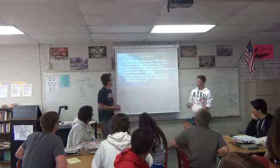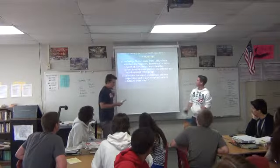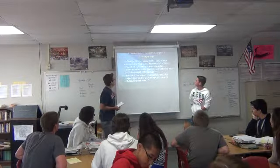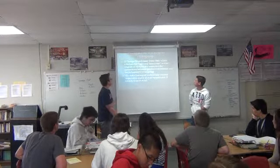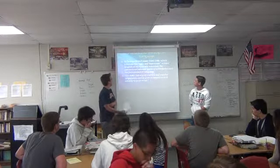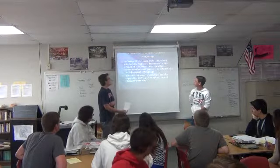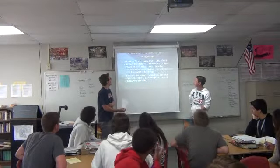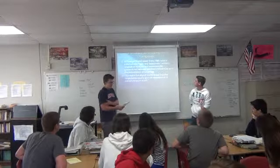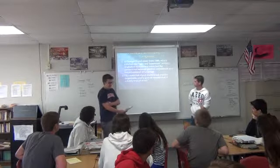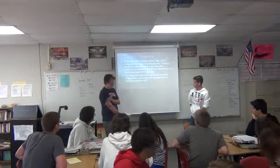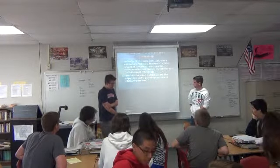Politics and the English Language is a George Orwell essay from 1946 that criticizes the ugly and inaccurate written English of its time and examines the connection between political orthodoxies and the debasement of language. It was originally published in the April 1946 magazine, The Arisen.